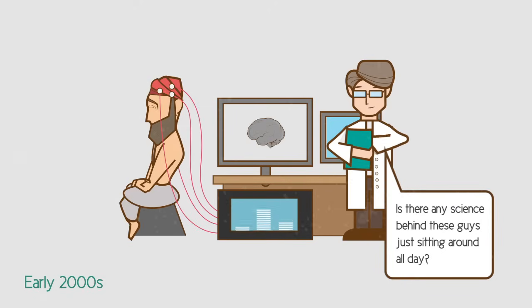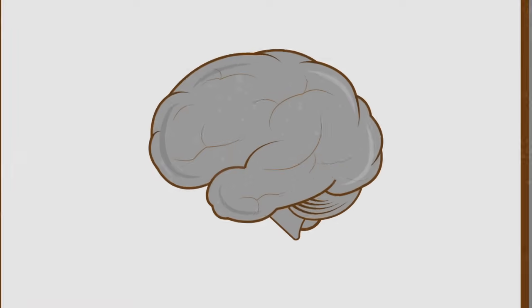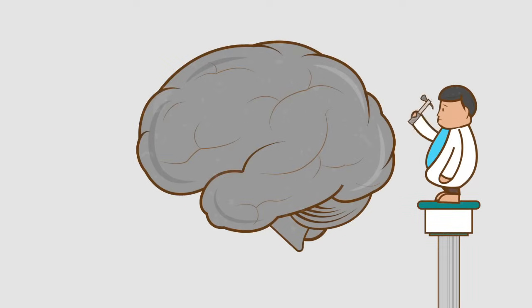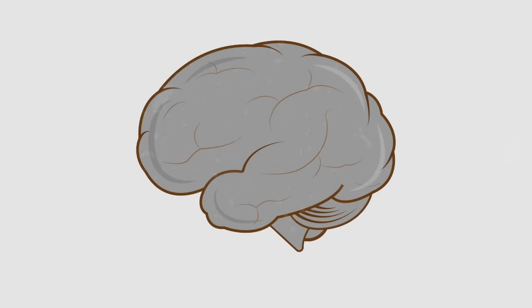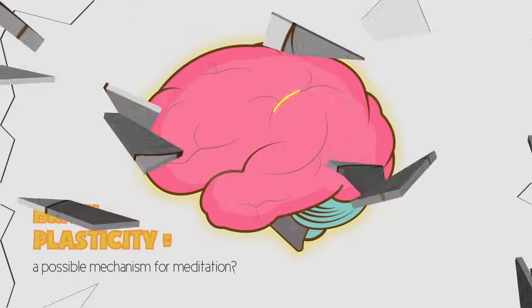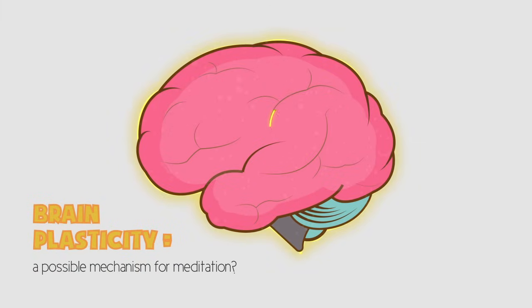Brain science was still in its infancy. And in fact, up until late into the 20th century, it was still thought that the brain was solid, like concrete, unable to change in its structure. But then, they discovered a phenomenon called brain plasticity. It seemed the brain could actually change.